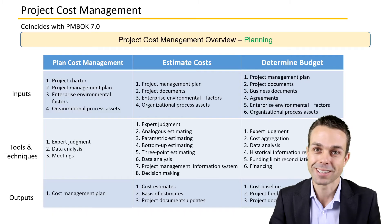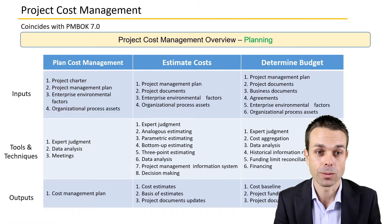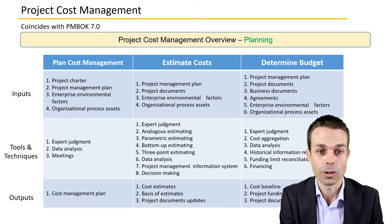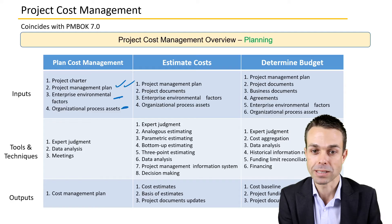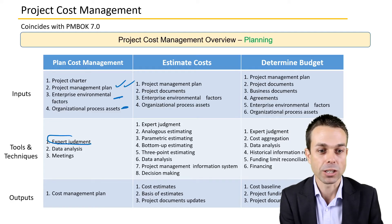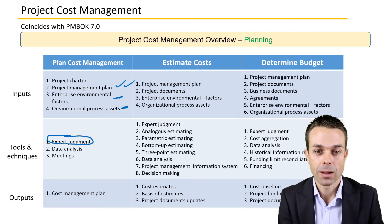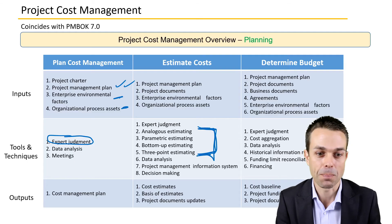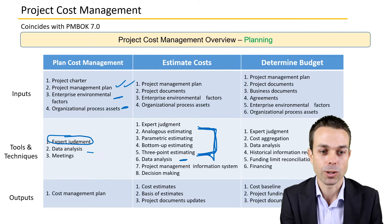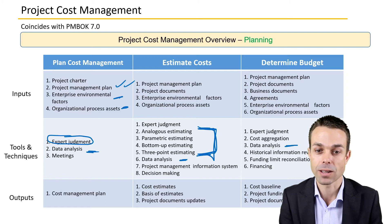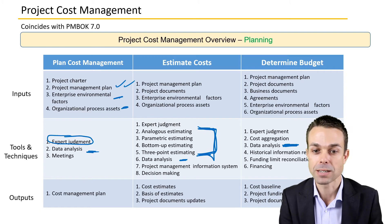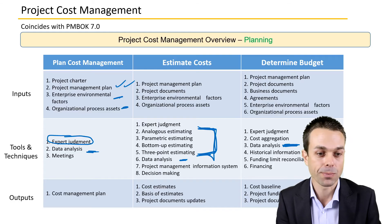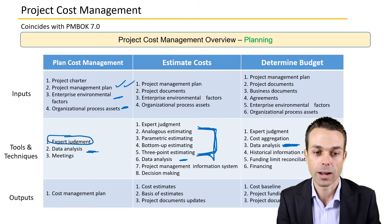There are a lot of different inputs, tools, techniques, and outputs for this particular process group. We've got the project management plan, and a lot of EEFs and OPAs as inputs. Expert judgment is a really big one, but we've also got all of our estimating techniques that we've seen in schedule management — we'll need to estimate for cost as well. We've also got data analysis to analyze how things are tracking and the information gathered for our budget.